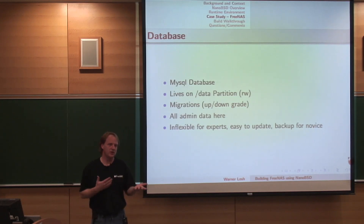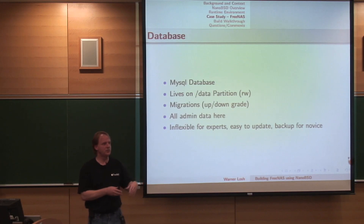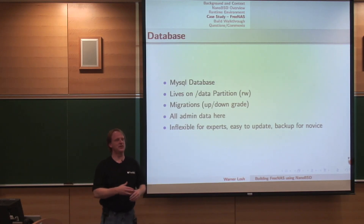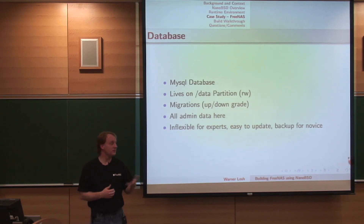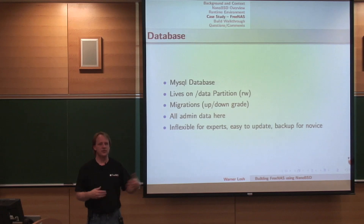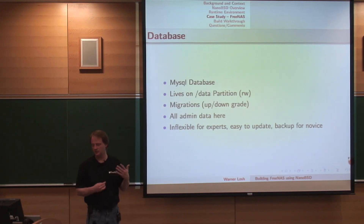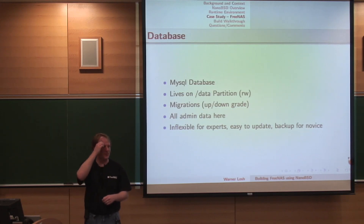One of the more controversial aspects of FreeNAS: in FreeNAS 7 and earlier, everything was stored in an XML database, except for things that were in /etc or some other configuration file stored elsewhere. This presented problems on upgrade — people would sometimes lose information, and the upgrade scripts were more complicated than they needed to be. In FreeNAS 8, we moved everything into a SQLite database that lives on the data partition. We then generate every single config file in the system from this database into the memory file system /etc. This is great for novices — if they want to migrate their system to a new system, they just grab the database file and go.